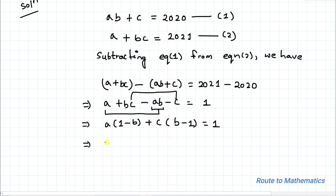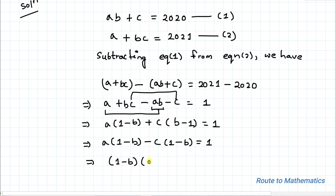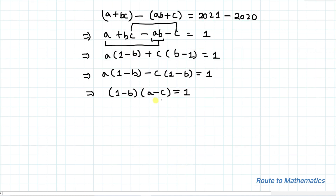This implies A(1 minus B) minus C(1 minus B) equals 1. Taking (1 minus B) as common, we get (1 minus B)(A minus C) equals 1. Let's call this equation 3.